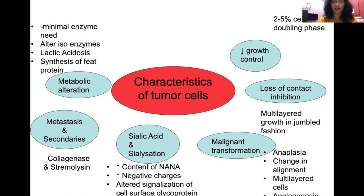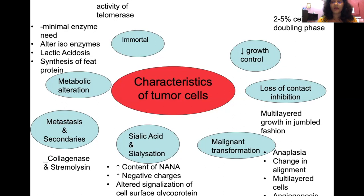Metabolic alterations in tumor cells include growth with much less energy, minimal enzyme requirements, altered isoenzyme patterns, and increased glycolysis — both aerobic and anaerobic — leading to lactic acidosis and synthesis of proteins that help cell growth. Cancer cells are also said to be immortal because of persistent activity of the enzyme telomerase, which prevents chromosomal alteration and protects chromosomes.